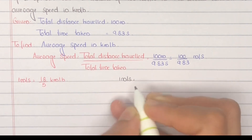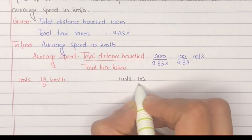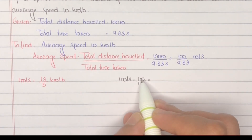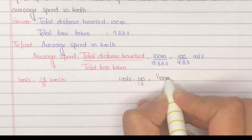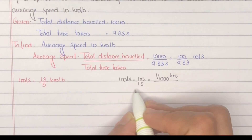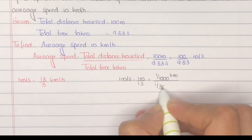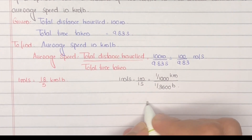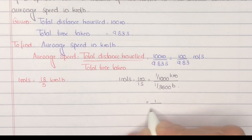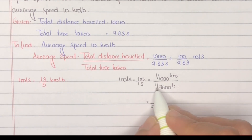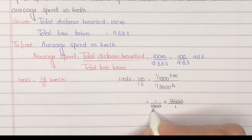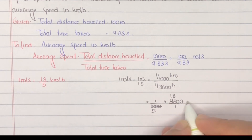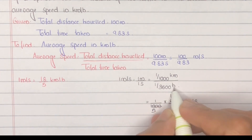Explanation: one meter per second equals one meter by one second. We need to convert meter to kilometer and second to hour. One meter equals one by one thousand kilometers, and one second equals one by 3600 hours. Solving: one by one thousand multiplied by the reciprocal, 3600 by one. Canceling common terms — 2 is common — gives 18 by 5, unit kilometers per hour.